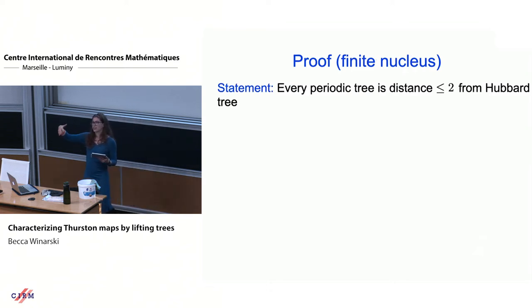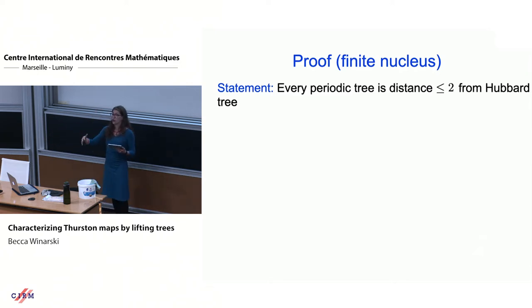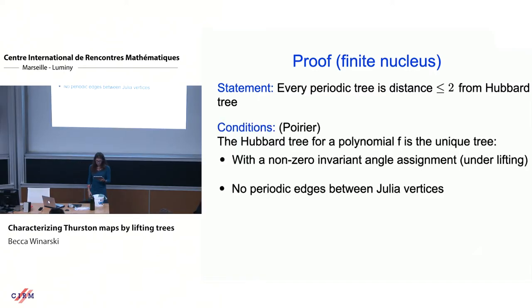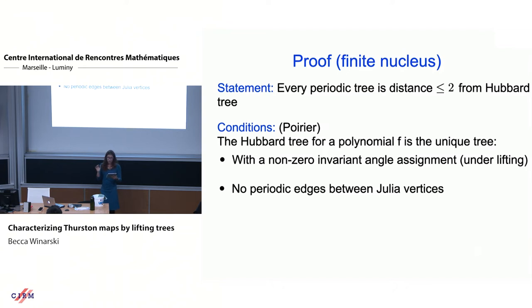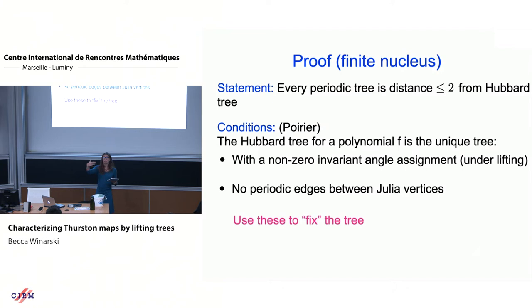Now we show the nucleus is finite by proving every periodic tree is at distance at most two from the Hubbard tree. We use Poirier's conditions again: a tree is a Hubbard tree if it has a non-zero invariant angle assignment and no periodic edges between Julia vertices. We take a power of the lifting map to make a periodic tree invariant, then fix it to satisfy Poirier's conditions. First we fix the angle structure.